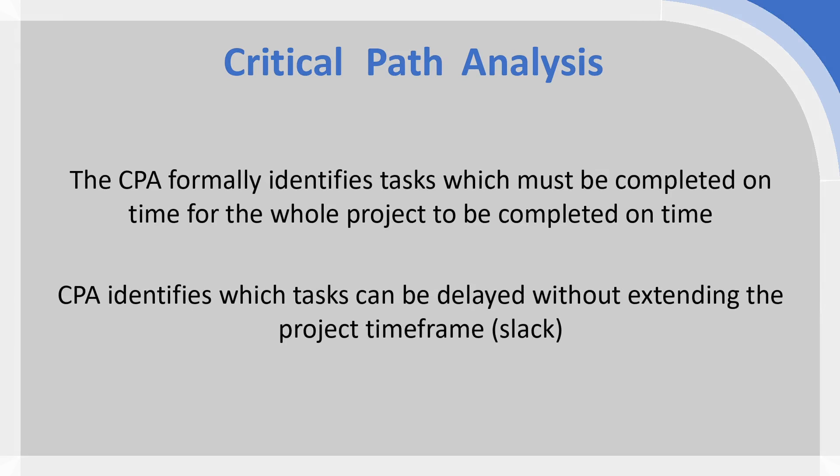If we first define CPA, it's a method of identifying tasks which must be completed on time for the project to be completed on time — that is the critical path. When you find the critical path in your project, it refers to that sequence of activities which cannot be delayed; if any of those are delayed, then your project is delayed. You're also identifying those tasks which can be delayed without making your project delivery late — these tasks have what we call slack or float, meaning they can be done later than originally planned without causing an overall project delay.